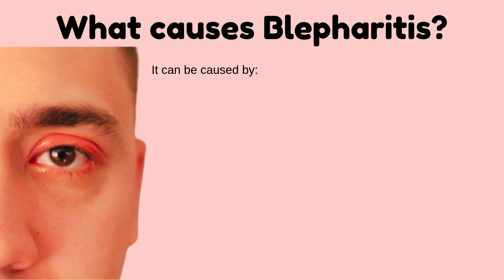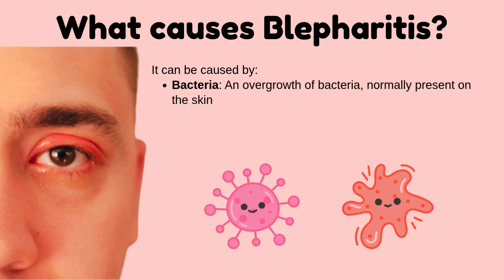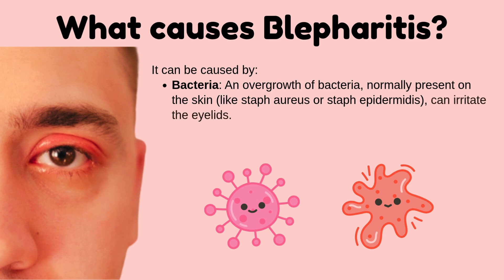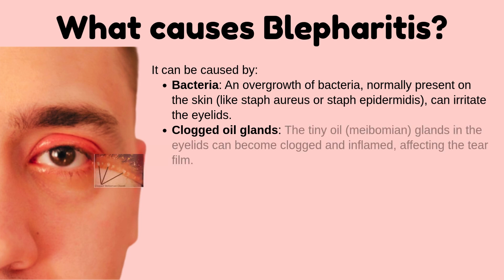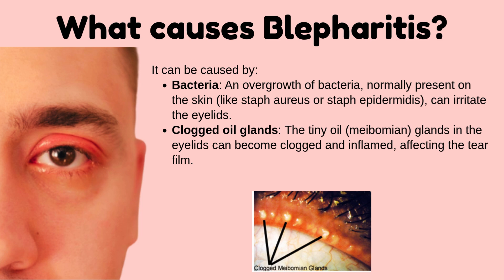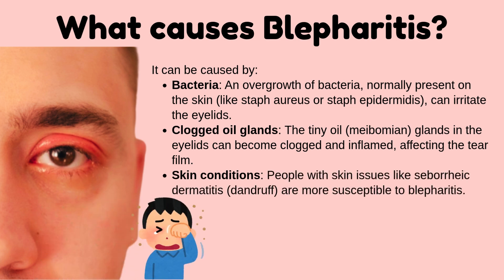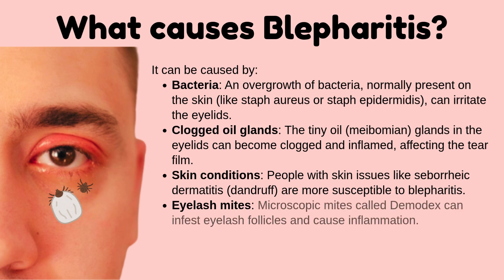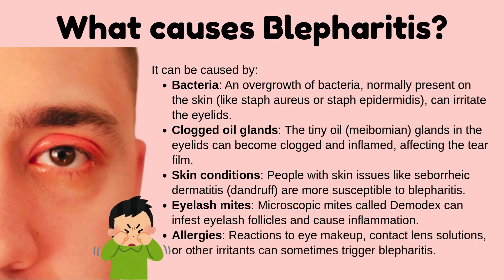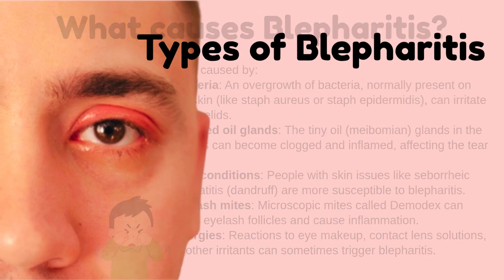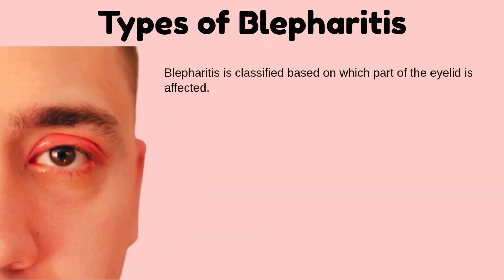Blepharitis can be caused by bacteria — an overgrowth of bacteria normally present on the skin, like Staph aureus or Staph epidermidis, can irritate the eyelids. Clogged oil glands (meibomian glands) in the eyelids can become inflamed, affecting the tear film. Skin conditions like seborrheic dermatitis or dandruff increase susceptibility. Microscopic mites called Demodex can infest eyelash follicles, and allergies to eye makeup or contact lens solutions can also trigger blepharitis.